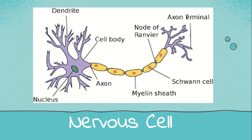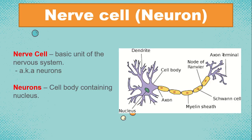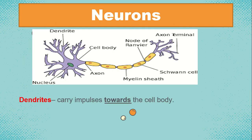Let's talk about the nerve cell. A nerve cell is the basic unit of the nervous system and is also known as the neuron. The cell body contains the nucleus. Neurons are responsible for giving signals or delivering messages. We have the basic parts of neurons. Dendrites carry impulses towards the cell body — they deliver the message from one neuron to the next.